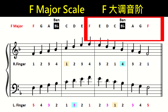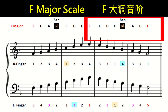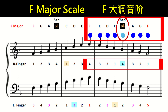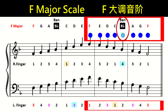The descending F major scale is F, E, D, C, Bb, A, G, and F. The single sound names descending are: F, E, D, C, ban, A, G, F. Left hand descending fingering is: 1, 2, 3, 1, 2, 3, 4, 5. Right hand descending fingering is: 4, 3, 2, 1, 4, 3, 2, 1.